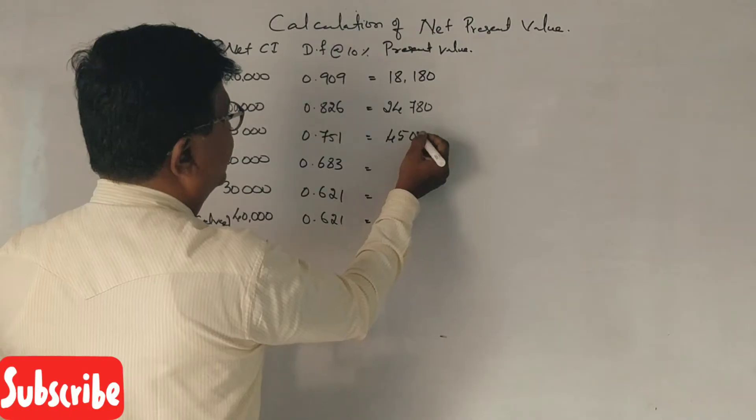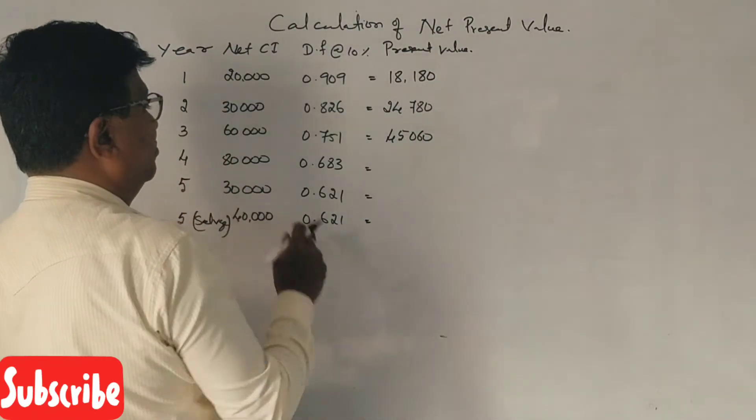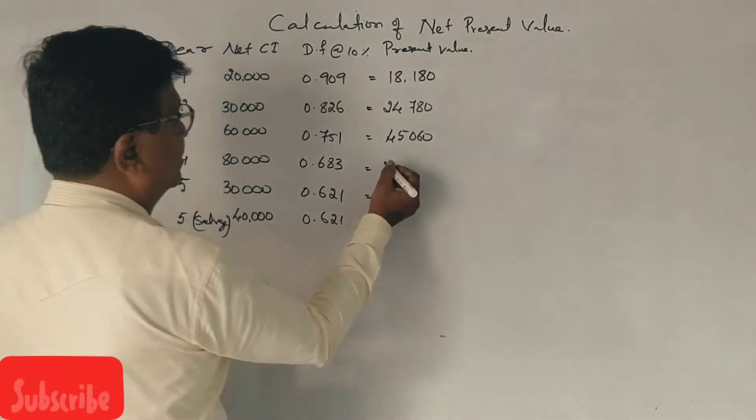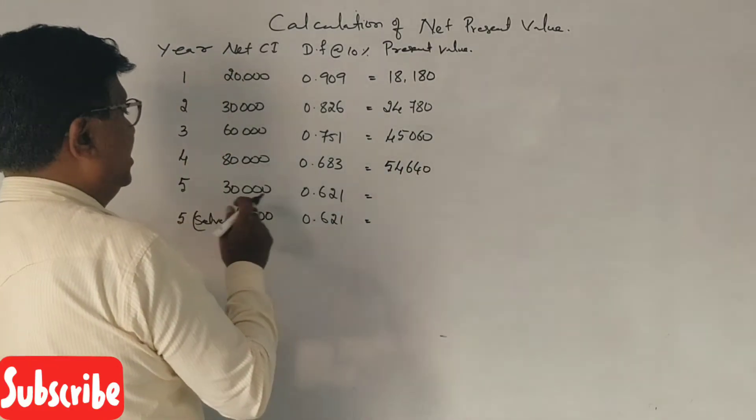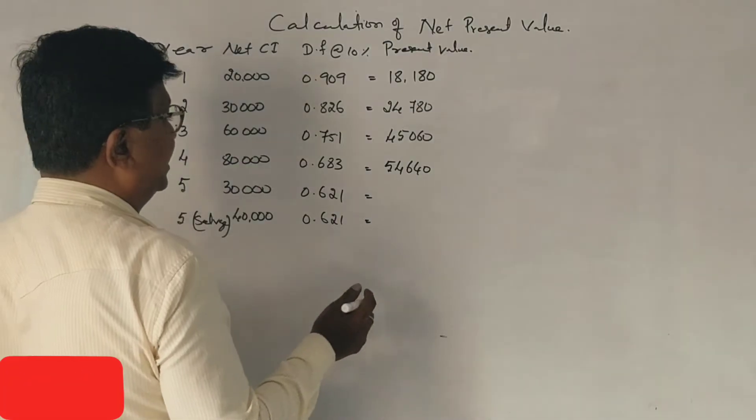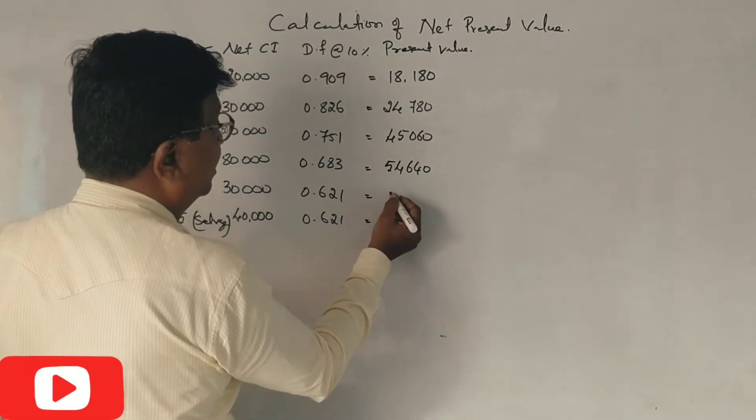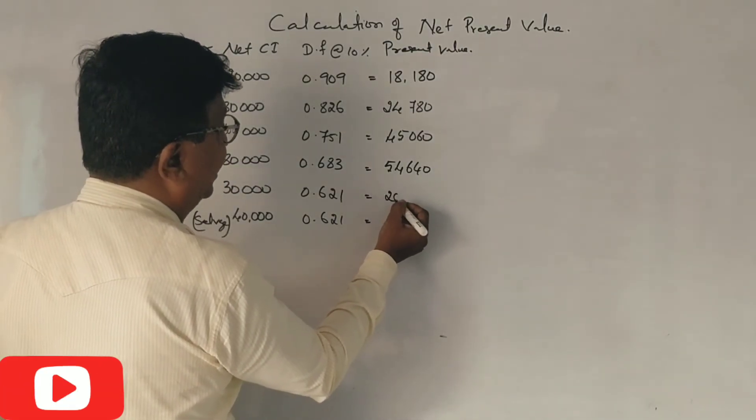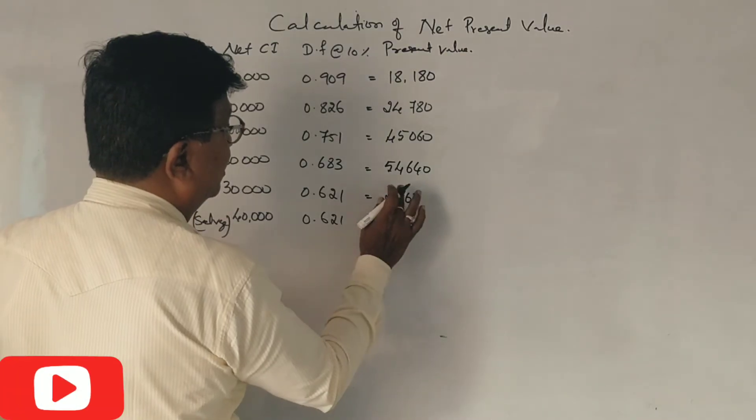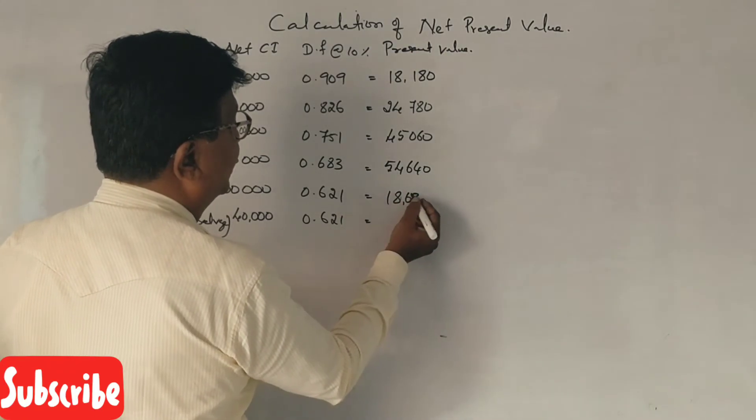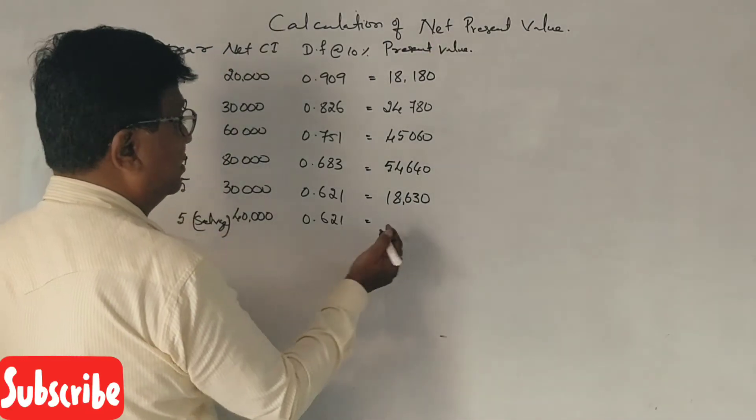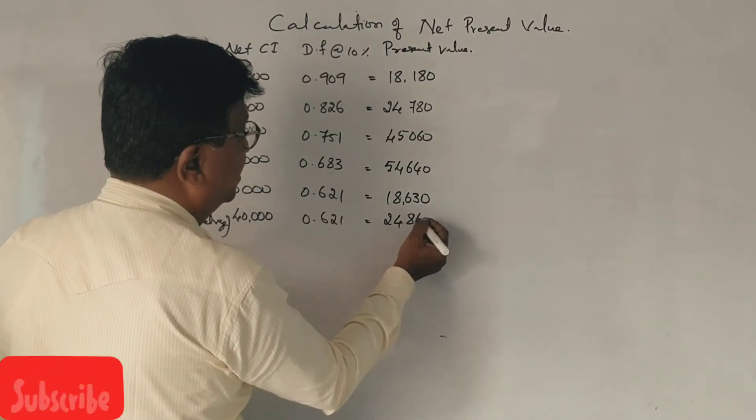60,000 into 0.751, 45,060. 80,000 into 0.683, 54,640. 70,000 into 0.621, 18,630. 24,840. Correct?